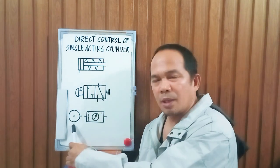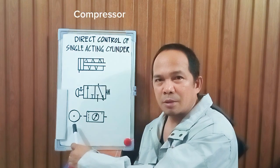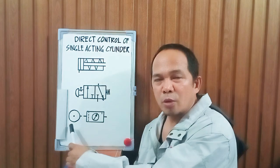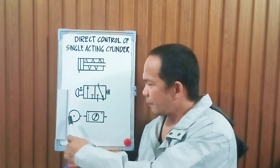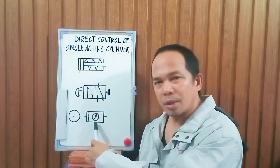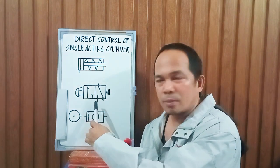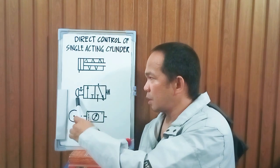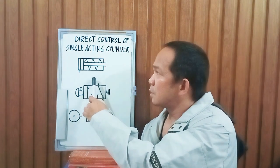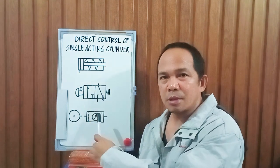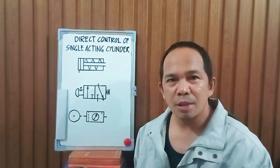Then we have here the compressor — the air supply. This is the source of compressed air, the compressor. So from the compressor, then to the FRL unit, then to the 2/2-way valve normally closed, spring return, push-button actuated, and then the single-acting cylinder. These are the schematic symbols we are going to use in direct control of a single-acting cylinder.